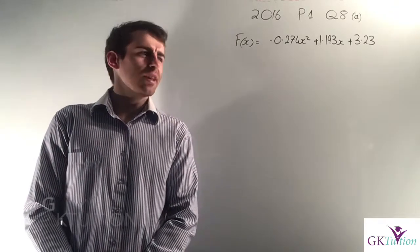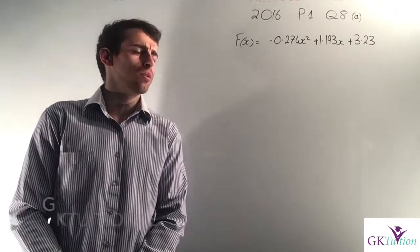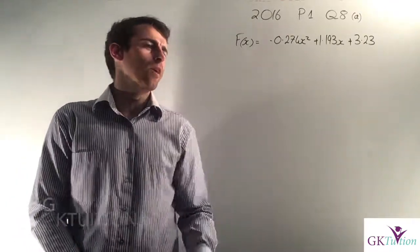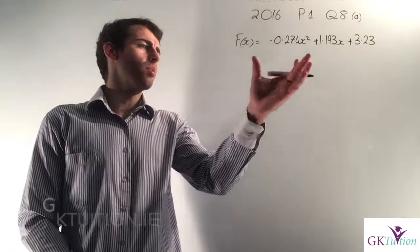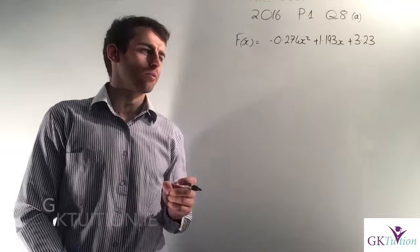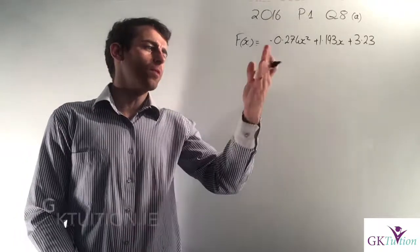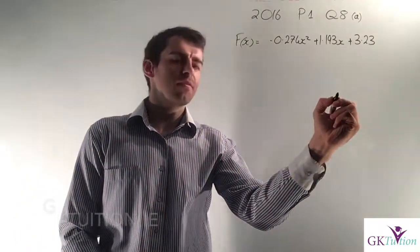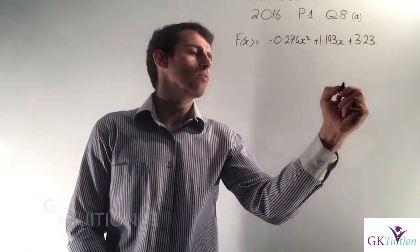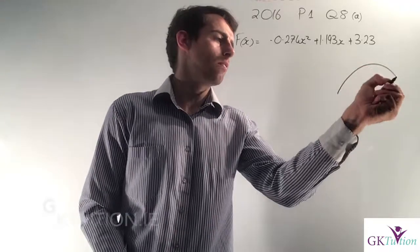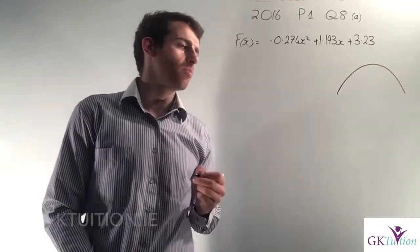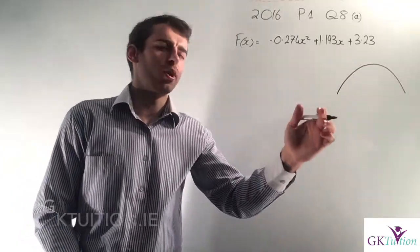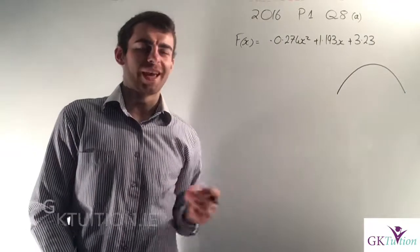In Part A of this question we're told that Sierra throws a basketball and that the flight of the basketball can be described by this function. First of all you should recognise it's a minus x squared. They've given the general shape — this is the flight of the ball. You should know that a minus x squared will always be an n-shape.